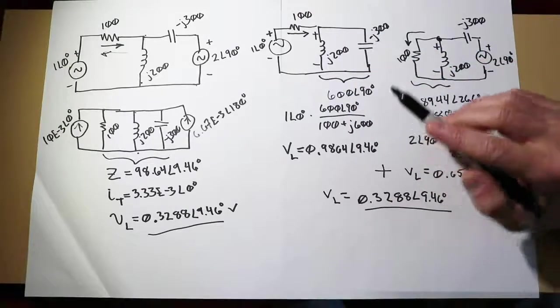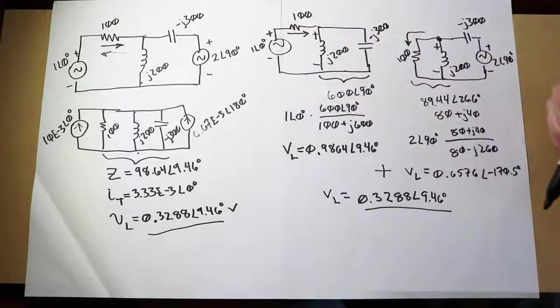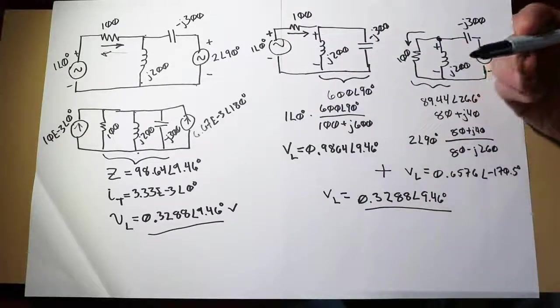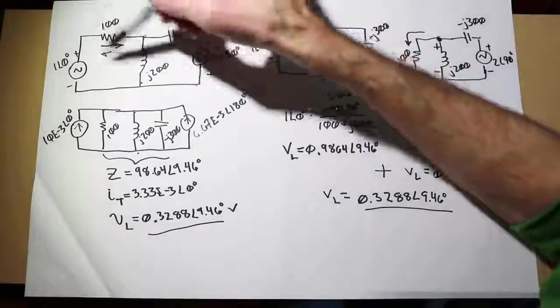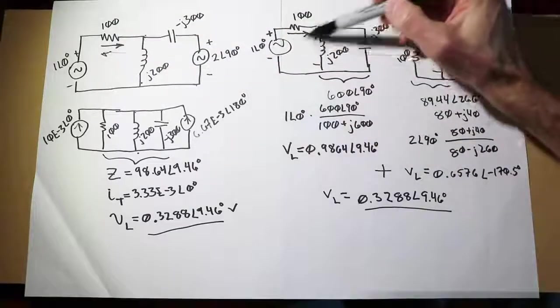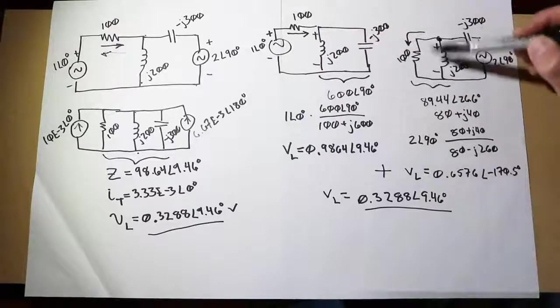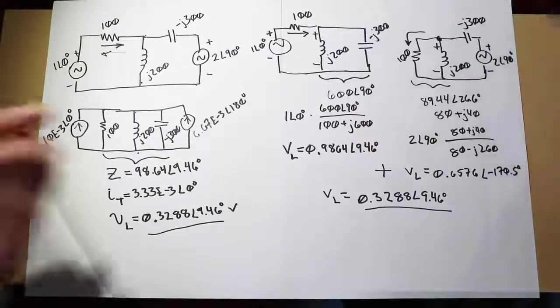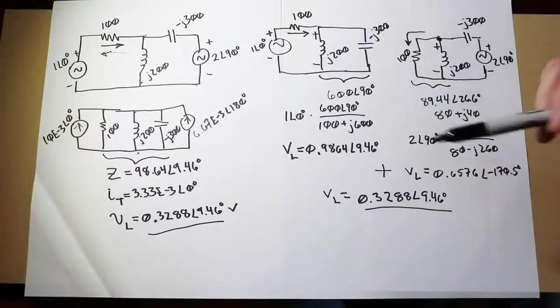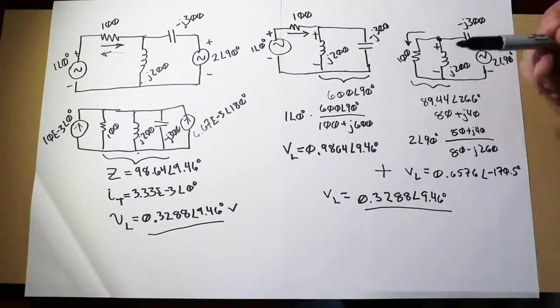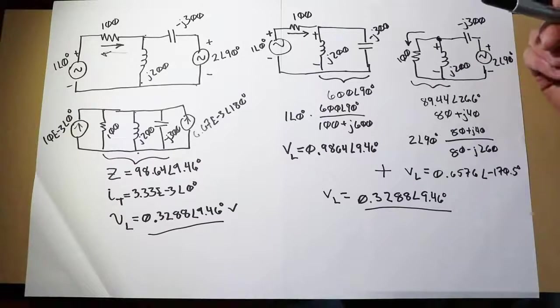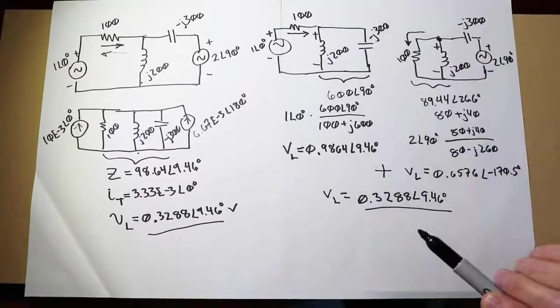That also applies for the functions. We can use this for things like currents and voltages, but you can't use it for power, at least not directly. I couldn't say I want to find the power in this 100 ohm resistor, find it in this circuit and then in this circuit and add the two together. That will not work. Power is a square law function. Power is proportional to the square of voltage or the square of current. Here's a good way to remember that.